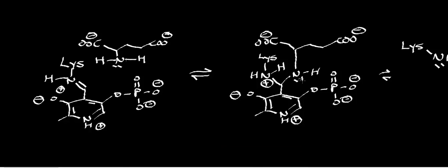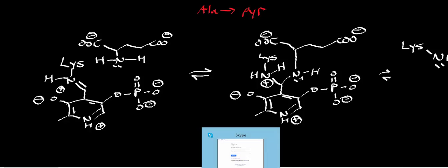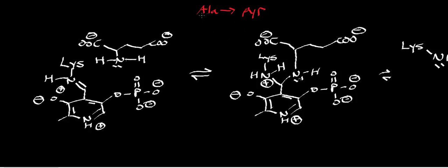Welcome back to the playlist on amino acid catabolism. In this video we're going to look at the mechanism of a transaminase. We're going to look at the alanine transaminase in the direction that goes toward biosynthesis of alanine. If you're catabolizing alanine, you'd be going from alanine to pyruvate; in this direction we're going from pyruvate to alanine. The net reaction is: L-glutamate plus pyruvate goes to alanine plus alpha-ketoglutarate.